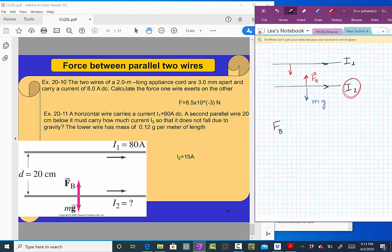So, this attractive force is equal to the weight of the wire I2 and that's why the wire I2 does not fall. With this, we want to know what is the current I2.